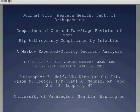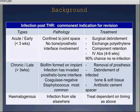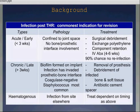Just to give some background: infection after total hip replacement is disastrous and is the commonest indication for revision surgery. There are three main types of infection after arthroplasty. Acute or early infection is within the first three weeks, when the pathology is generally confined to the joint space with no bone or prosthetic interface involvement. Treatment is aggressive surgical debridement, exchange of the polyethylene, aiming for component retention and IV antibiotic suppression — giving around a 90% chance of no reinfection.